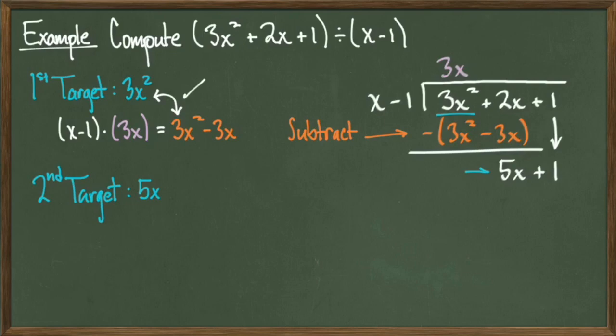So we're going to play the same game and multiply our divisor x minus 1 by something so that a 5x appears. Notice that multiplication by 5 gives us a product of 5x minus 5. Our target shows up, so we're going to add 5 to the quotient above.